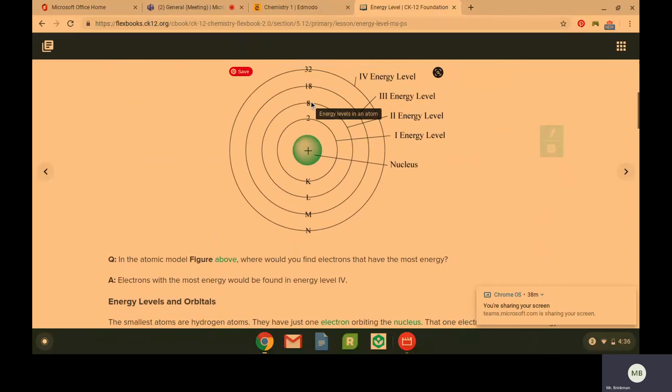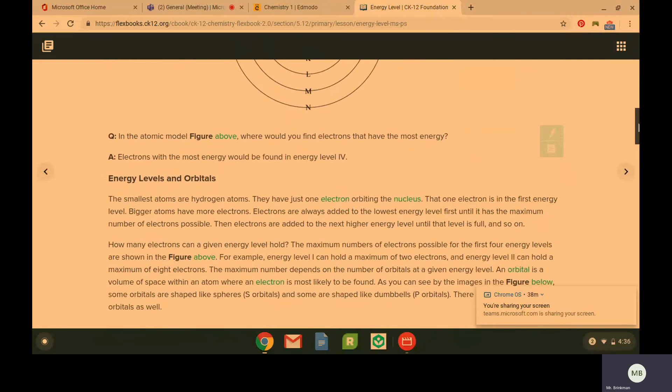Energy level two has four orbitals. So it can hold eight electrons. So each orbital can hold two electrons.